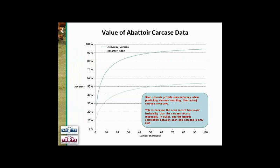This slide compares accuracy of an eye muscle area or marbling EBV when you only have scan data — shown as the dotted line — compared to having direct carcass data. Even with a lot of scan progeny, EBV accuracy will never get above about 60%, because the correlation is not 1. However, with actual carcass data, you can get accuracy up around 80% with only 15 or 20 progeny. Actual carcass data is more valuable than scan data for influencing carcass EBV accuracy.